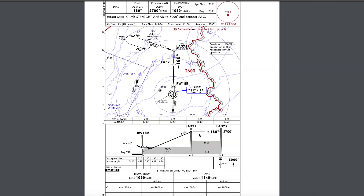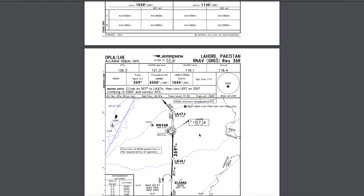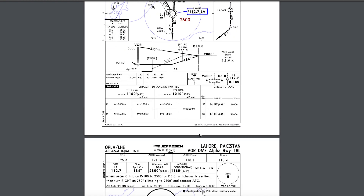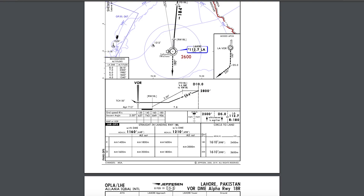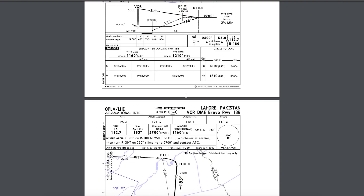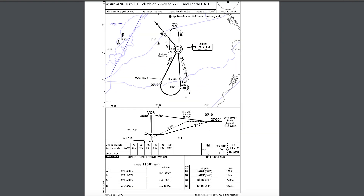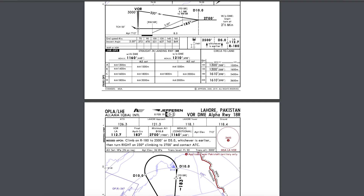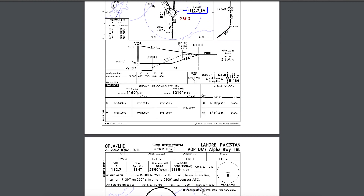We also have other VOR approaches, RNP GNSS approaches, and VOR DME Alpha approaches, among others. My main focus was on the ILS approach and the RNP approach. I have explained both. If you want to learn more, you are most welcome to open up the charts and study them, and you can ask me questions in the comment section below or email me.